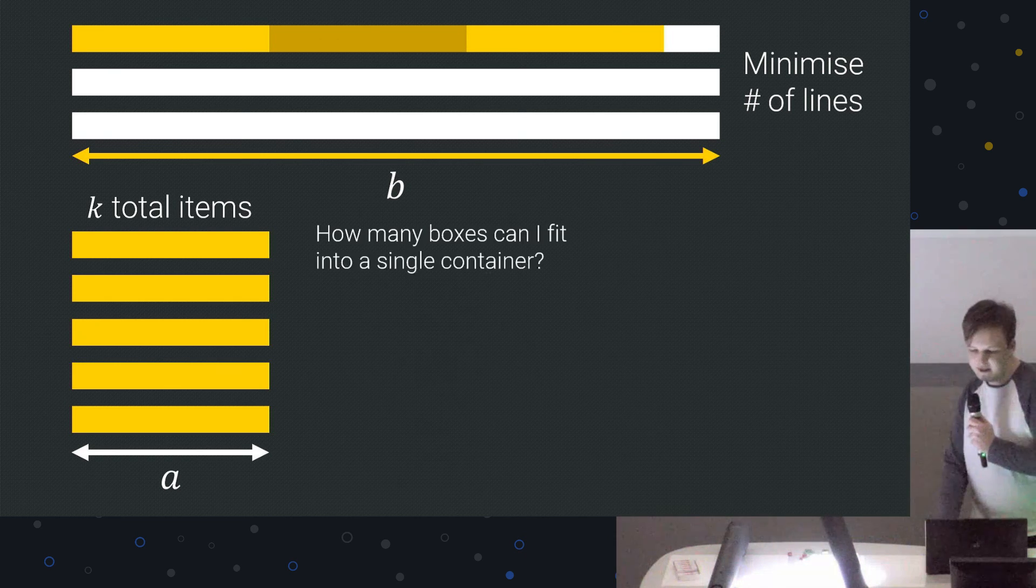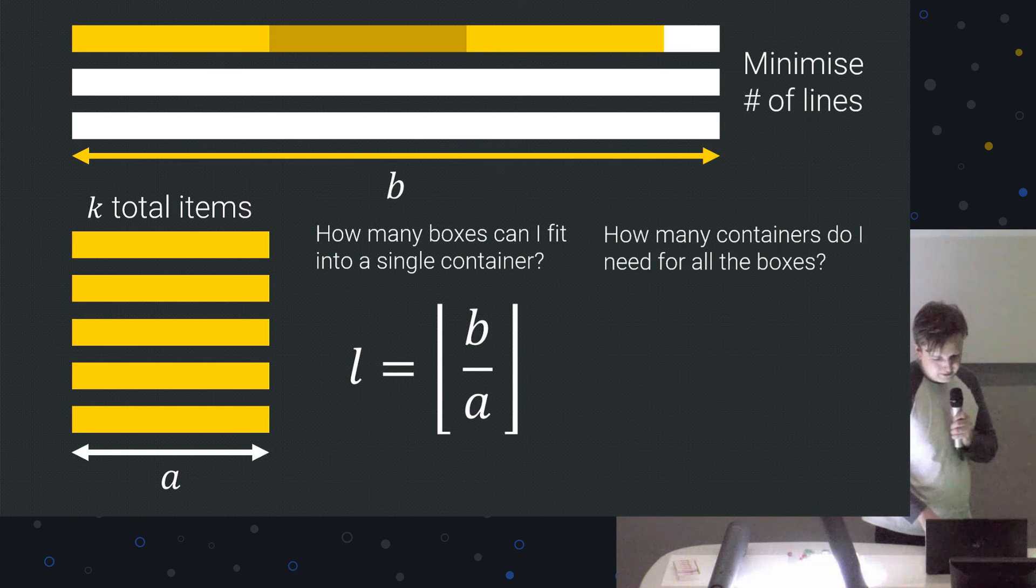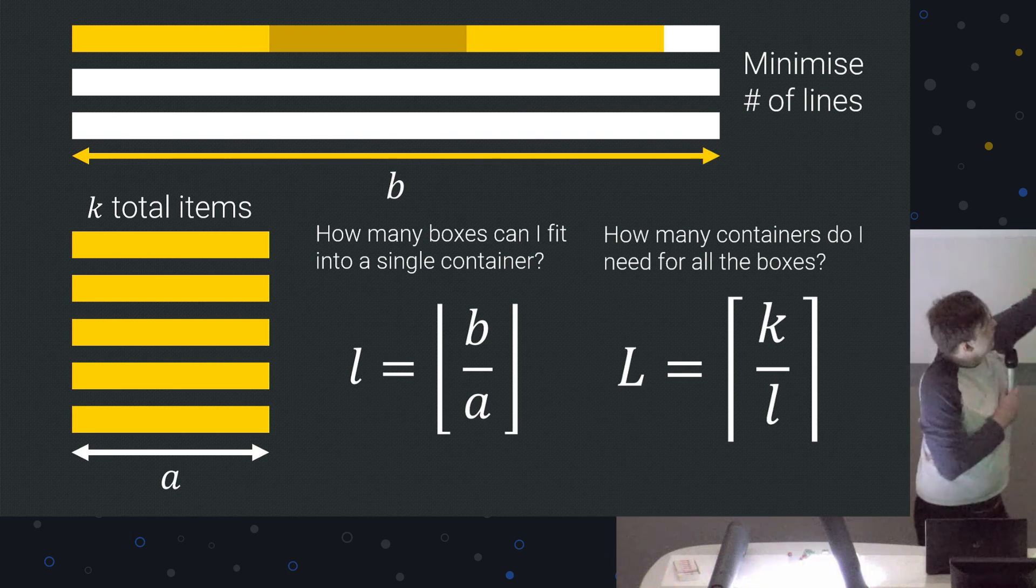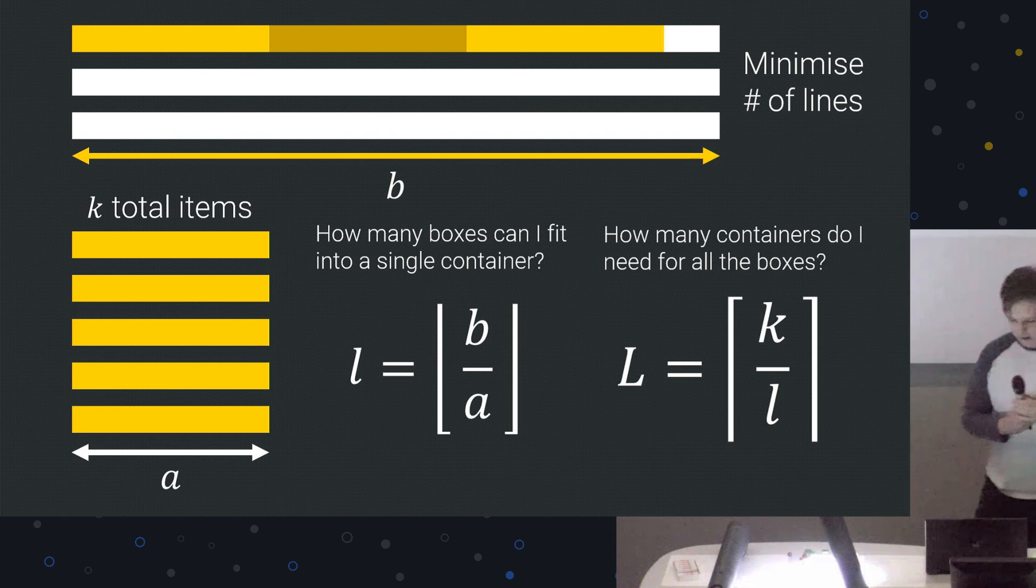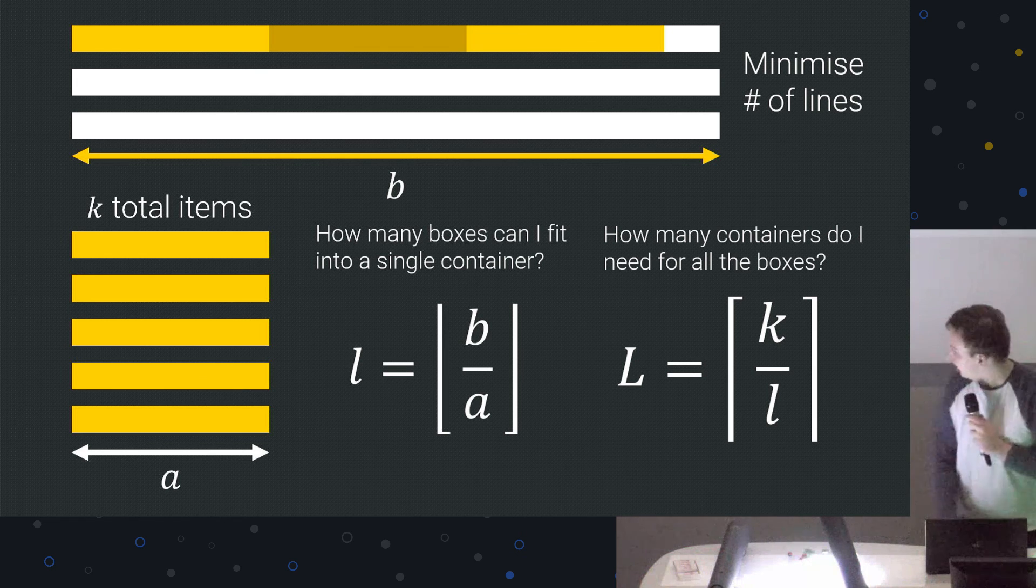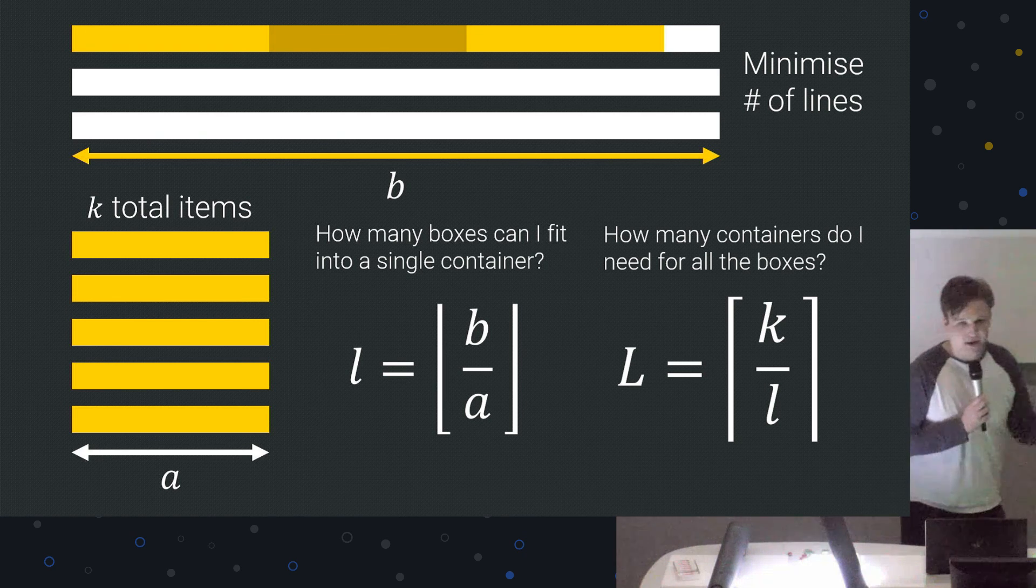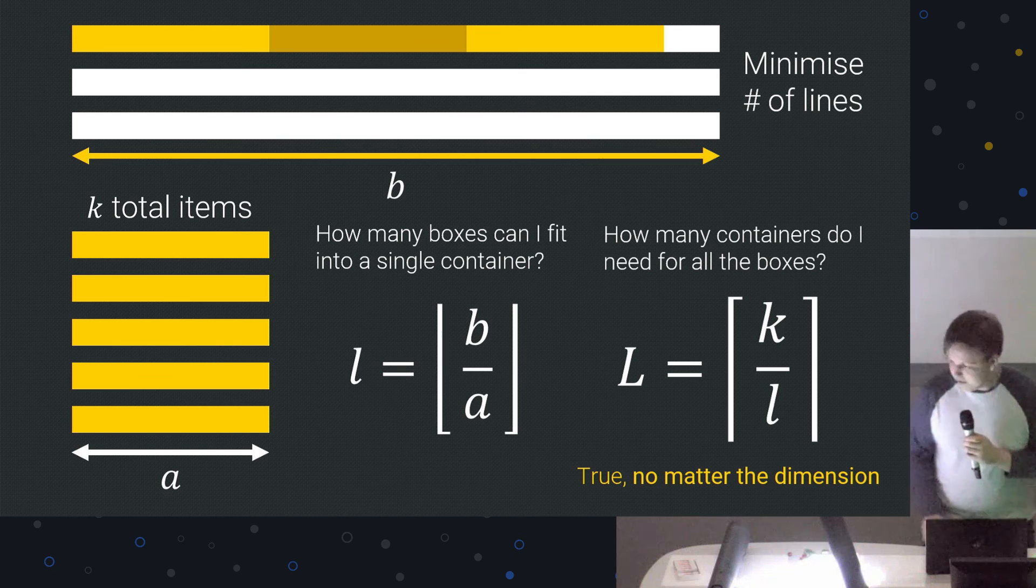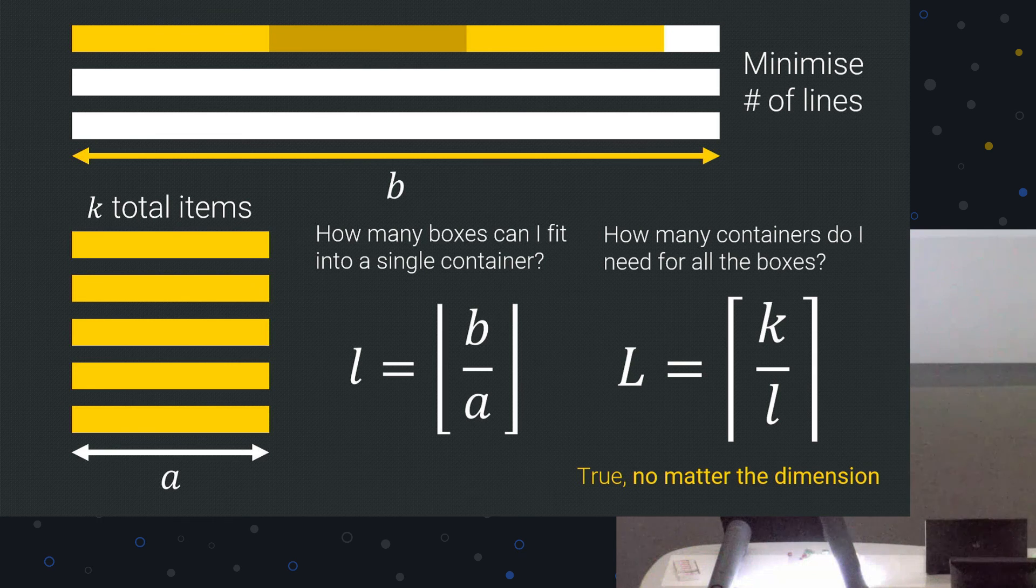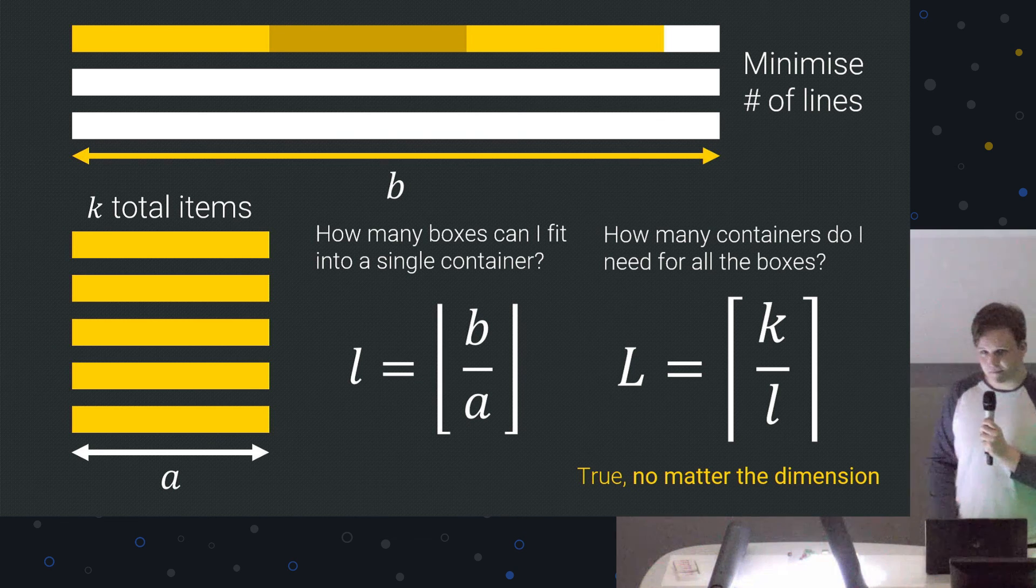So now we've got these nice, identically shaped packages. And let's call the, they each have length A, and the line has length B. So we can just whack, whack, whack, whack, and that's the most we can fit in. We know that for certain. If we have k total items, firstly, how many boxes can I fit in a single container? The answer is this. That means the floor function, which means we round down. And how many containers do I need for all the boxes? Well, it's kind of similar. We take what we had before, we divide it, and then we round up.